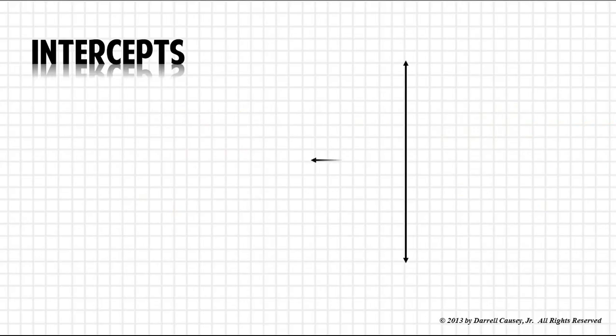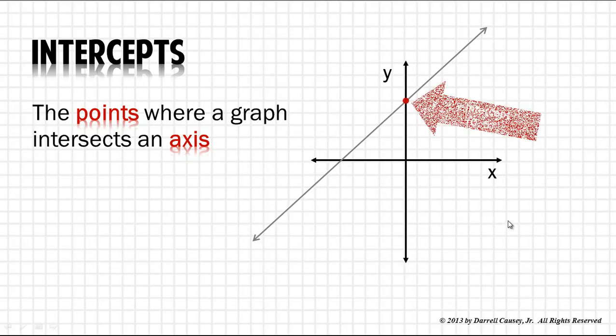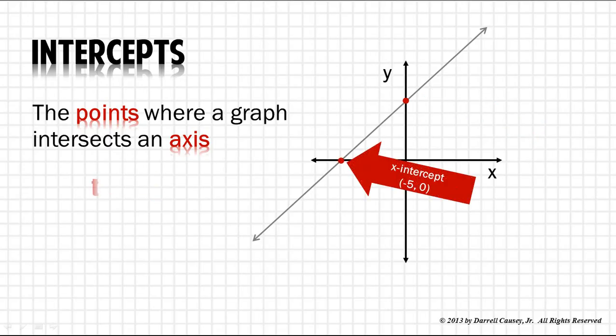So first, what are intercepts? We'll draw a little graph there. Intercepts are the points where a graph intersects an axis. As you'll see here, we have an intersection here and an intersection here. There's our y-intercept and x is always zero. And there's our x-intercept and y is always zero.